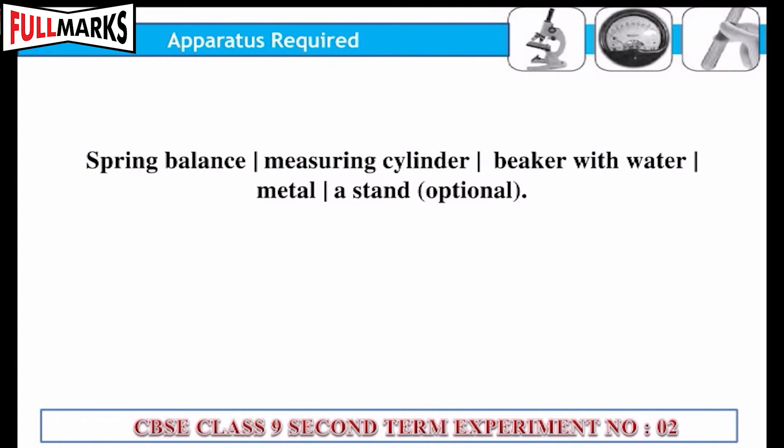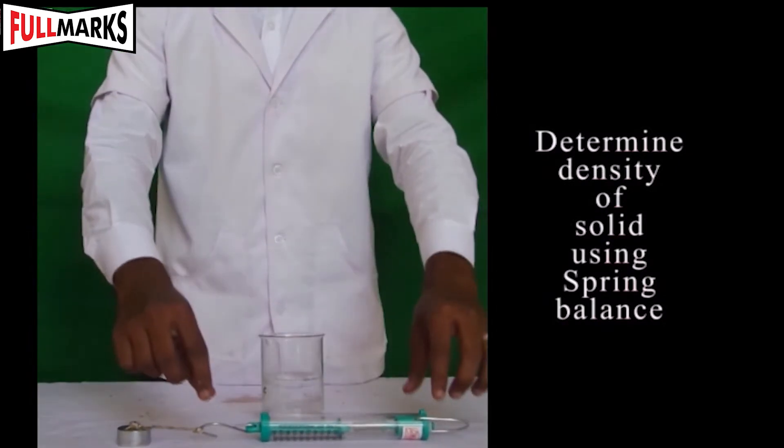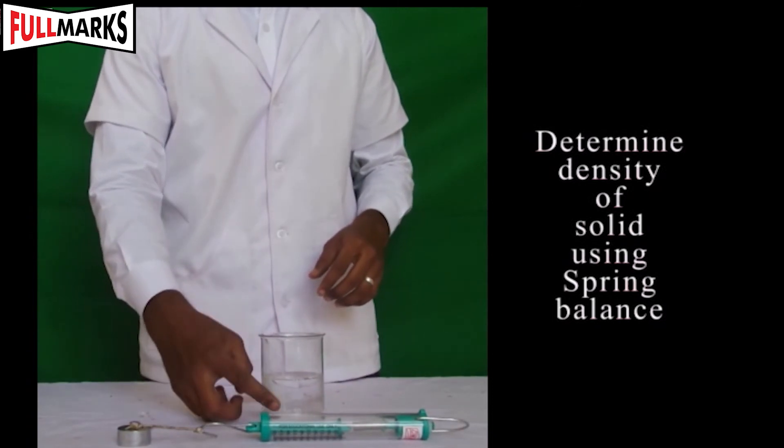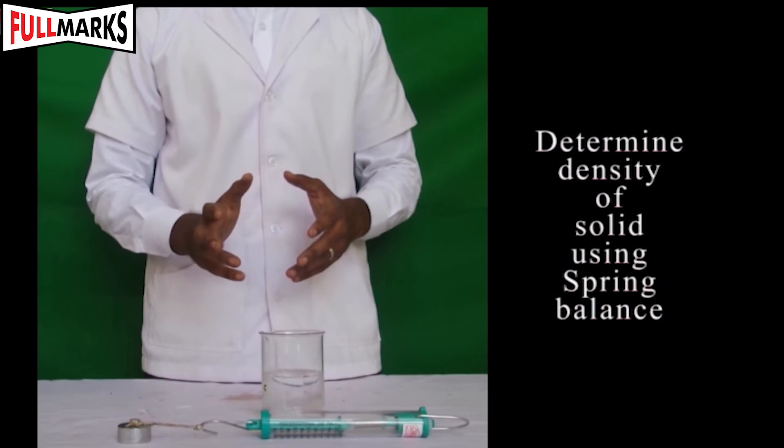Procedure: Tie a metal bob with a string of cotton to the hook of the spring balance. The spring balance should be checked for any error. Let the zero error be X.